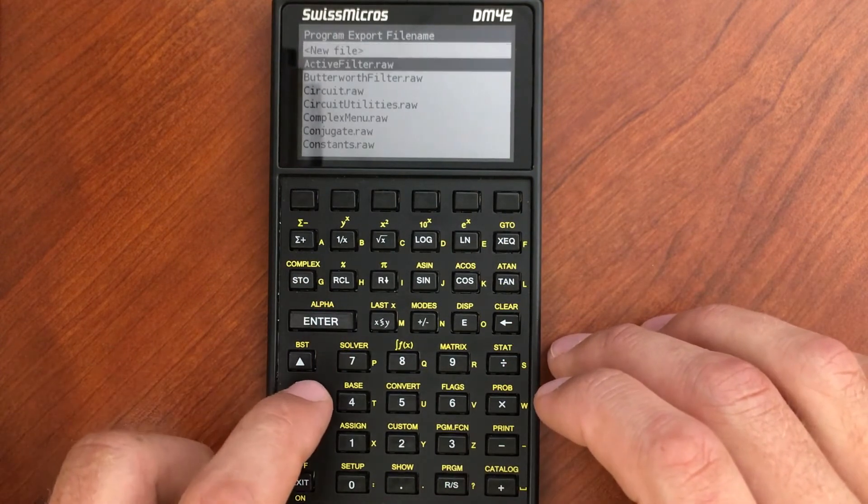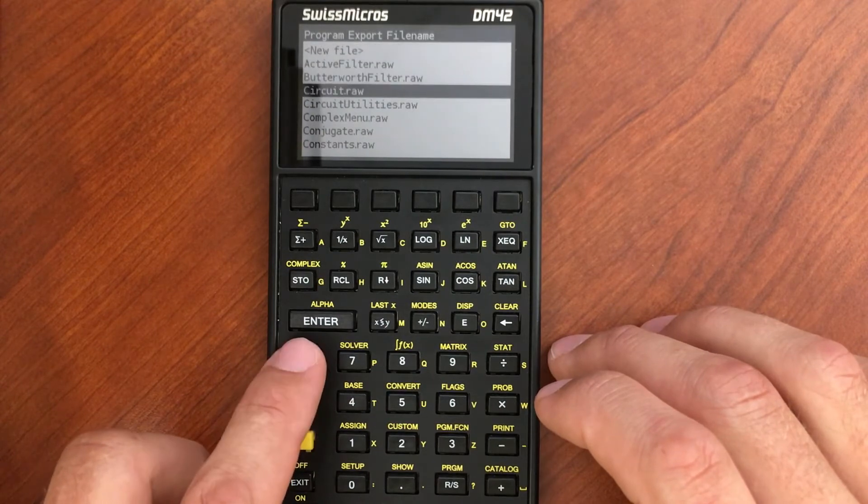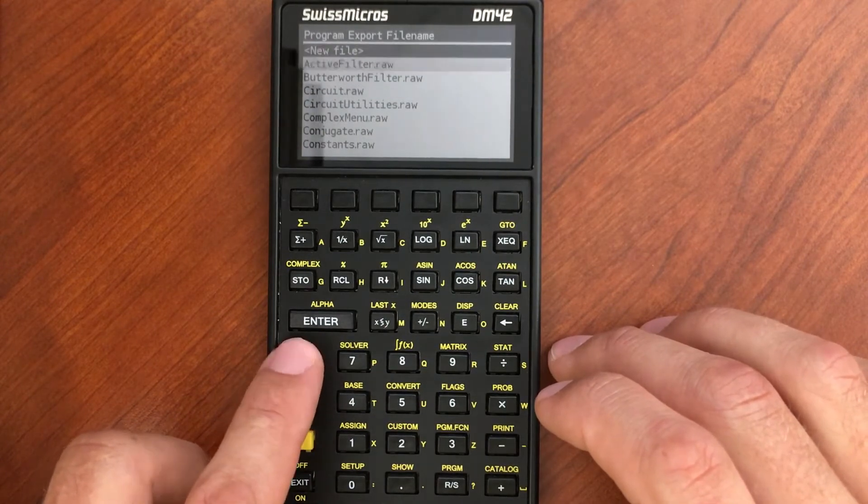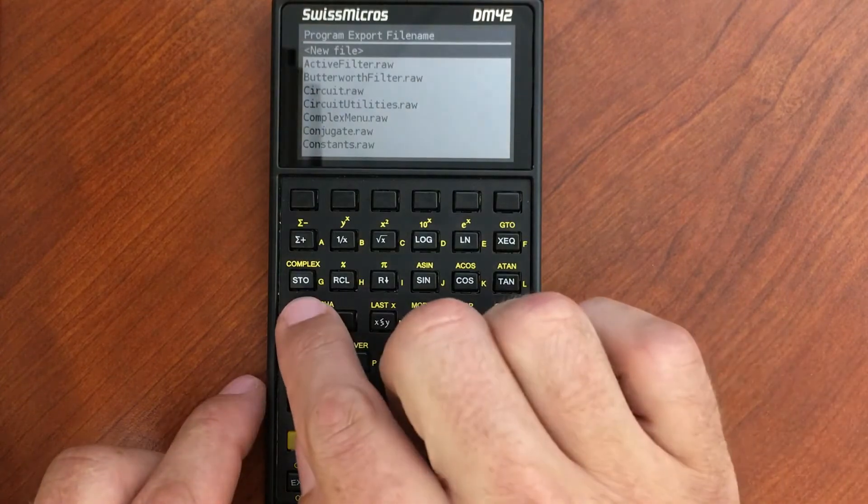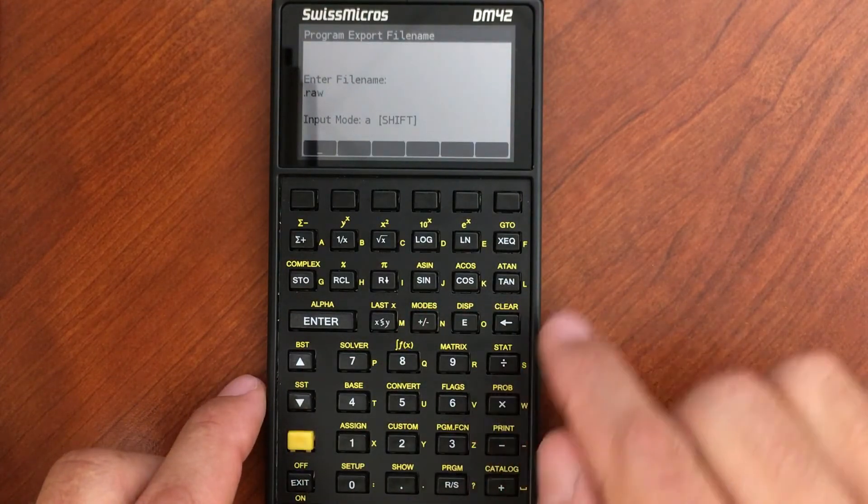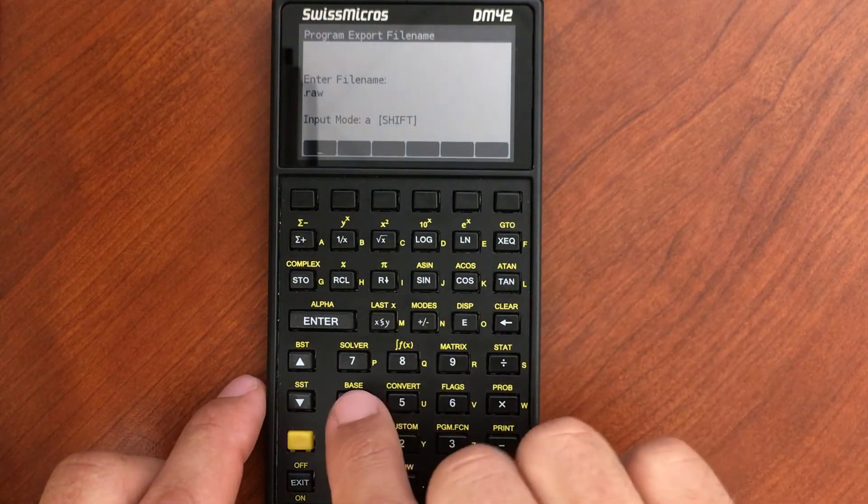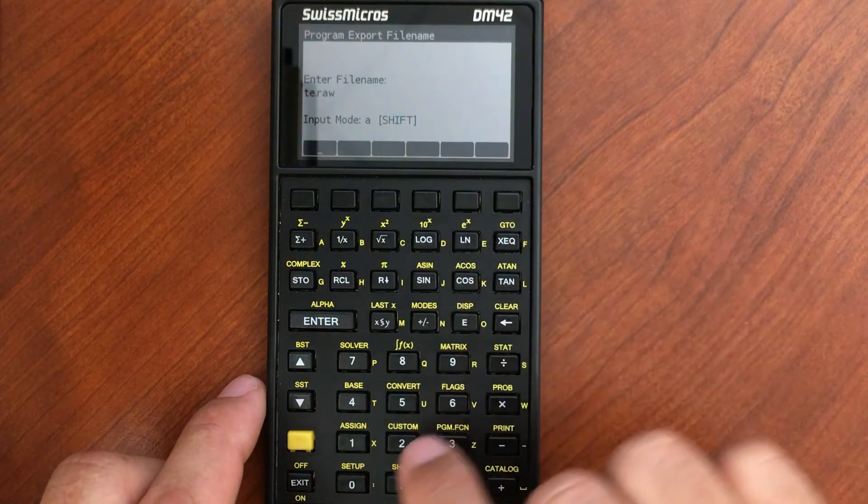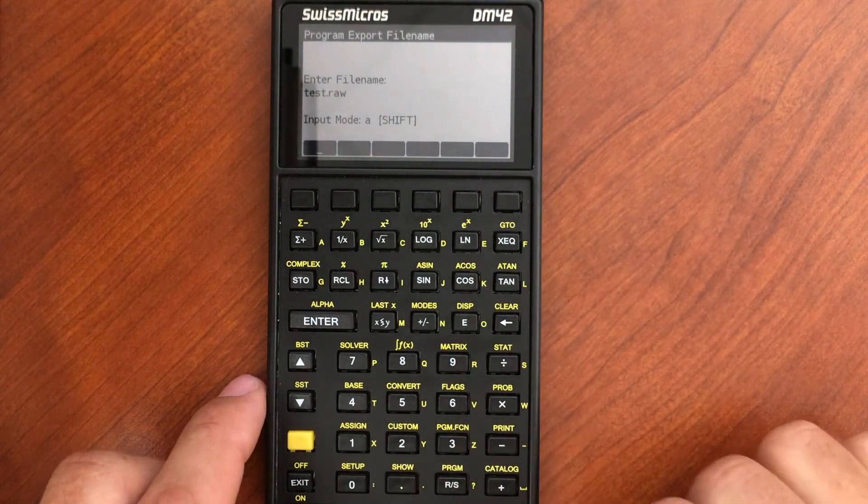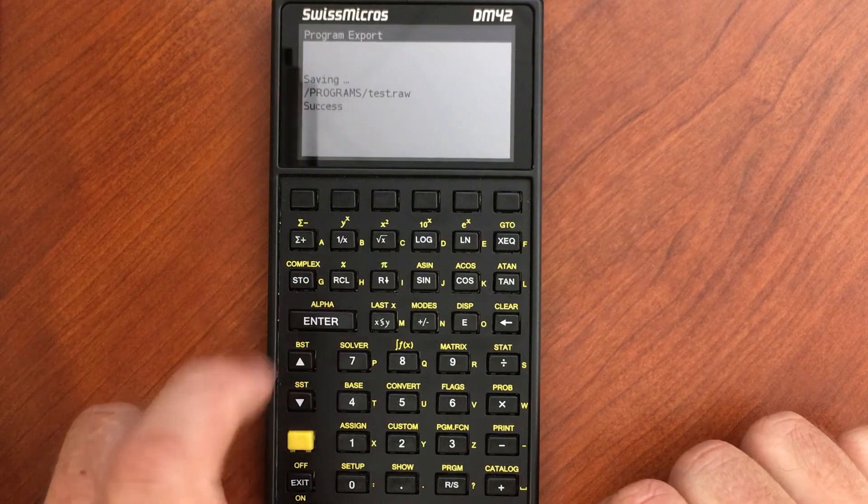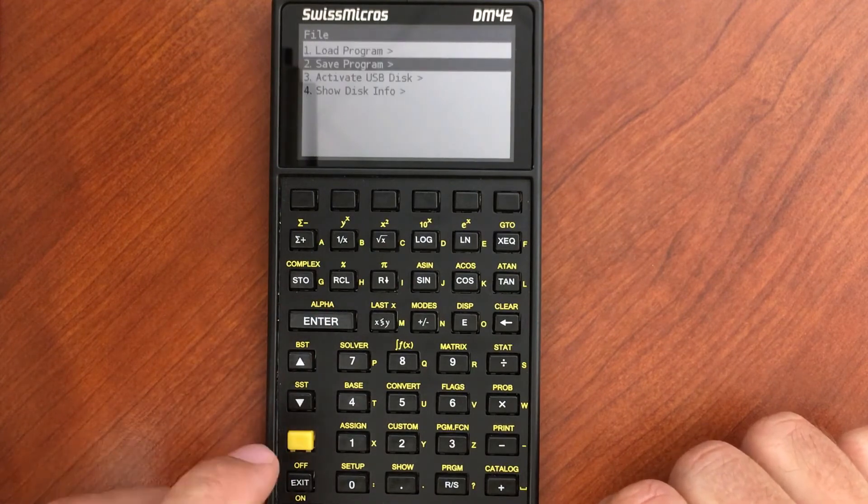I can save it as a raw file. That's what all these program files are going to be imported and exported as. I'm going to do a new file, let's call that Test. I can use the keyboard here. I've got T E S T. Now I'm going to hit Enter and I've saved that program.